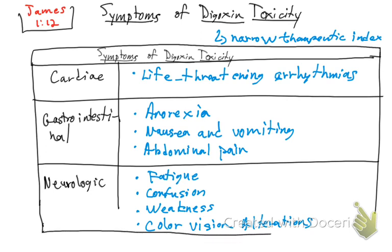Of all the symptoms we mentioned, we should remember most the life-threatening arrhythmias in the cardiac system, and in the neurologic system, we need to remember color vision alterations. These are the specific ones to look for, as the others are less specific.